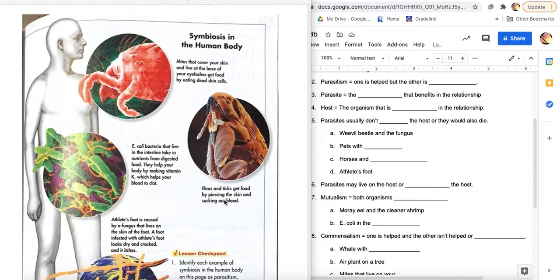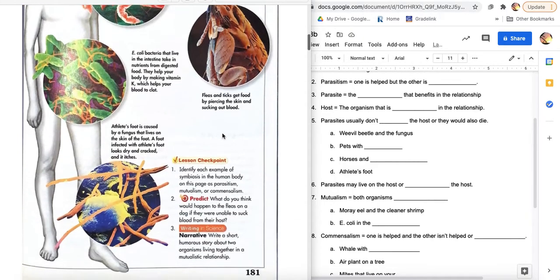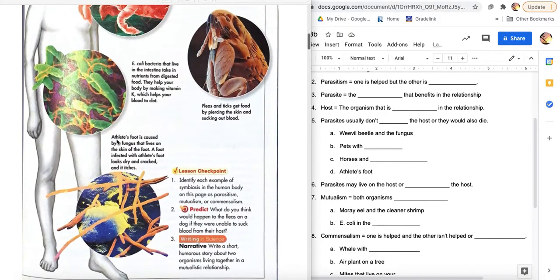We already talked about pets with fleas, but ticks get food by piercing the skin and sucking out blood. So you might have had a tick in you. If you walk through the woods, sometimes you get ticks climbing on you and then they try to bite into you and they can pass Lyme disease to you through that way.